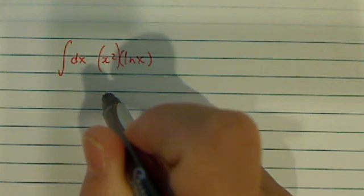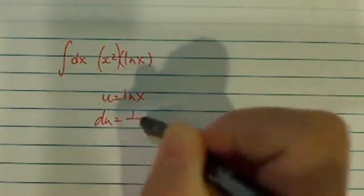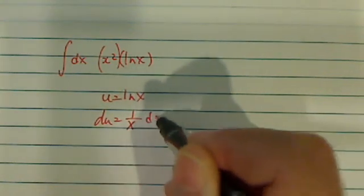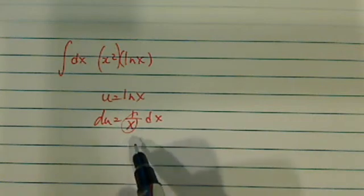So we're going to start with, we're going to let u equal to natural log of x. The reason we do this one is because du is equal to 1 over x, this one will actually take a power of that one off.